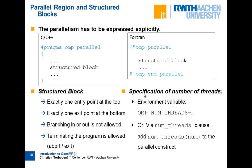A parallel region consists of a structured block — in C and C++ it is bounded by curly braces, with a well-defined begin and end. Branching in or out is not allowed; doing so makes the program non-standard-conforming with undefined results. You should not express a fixed degree of parallelism — don't write your parallel algorithm assuming a given number of threads, because two years later you may be running on a machine with 16 or even 240+ cores.